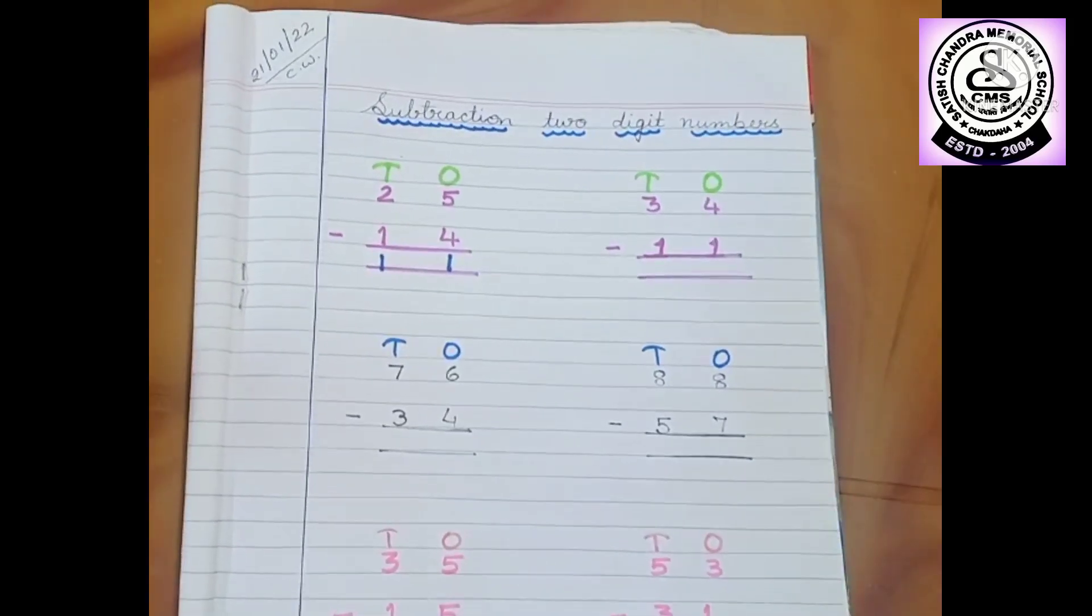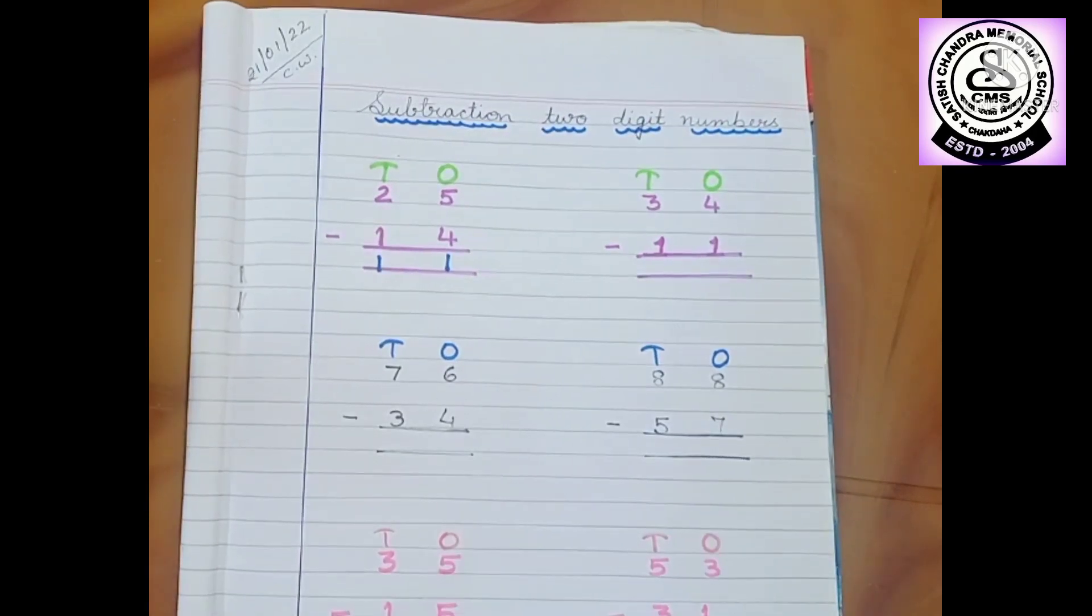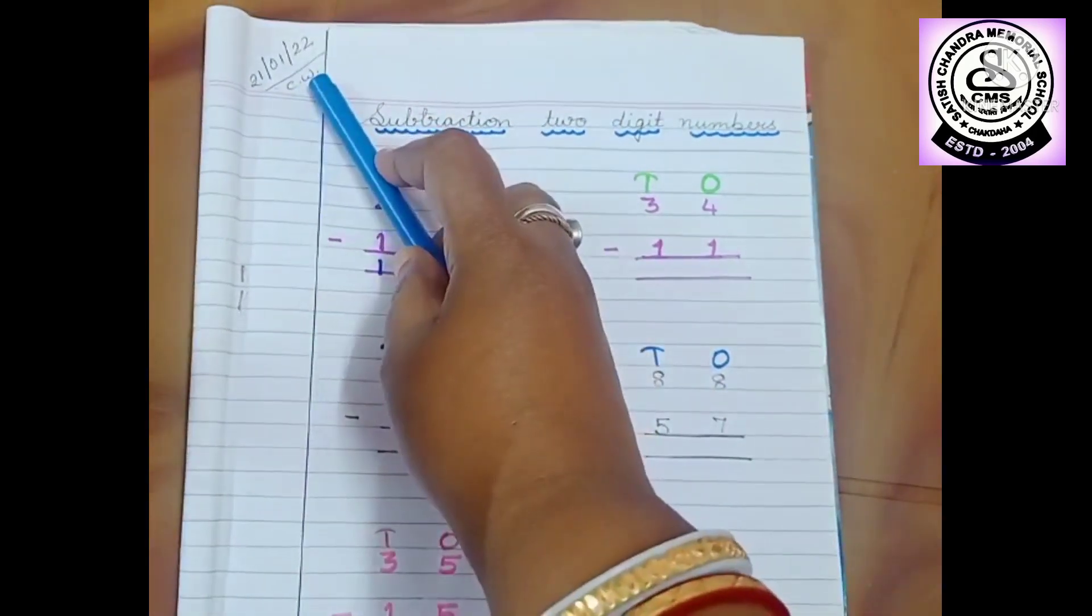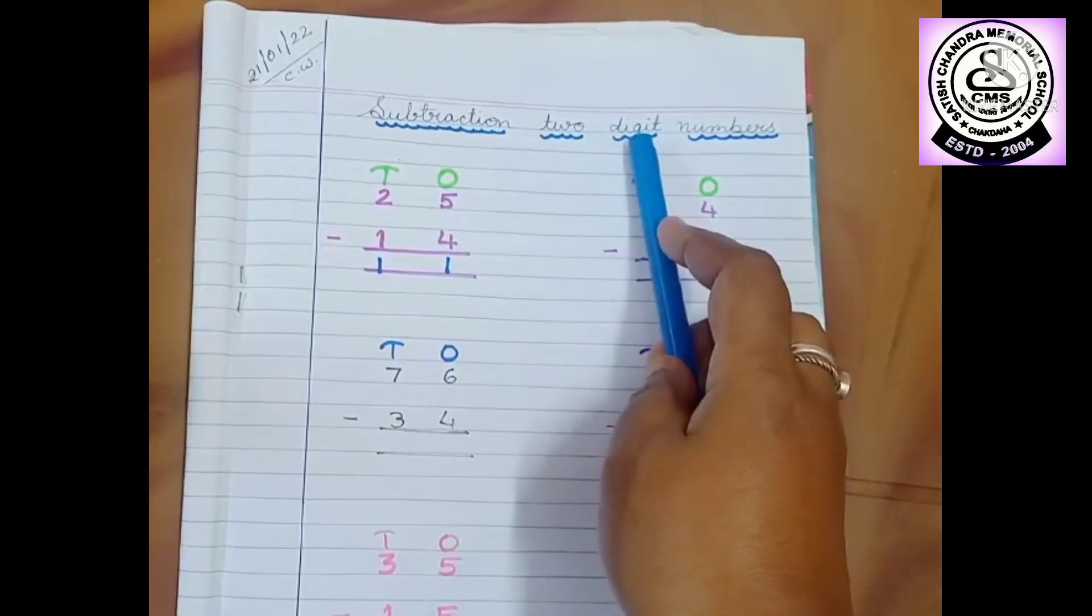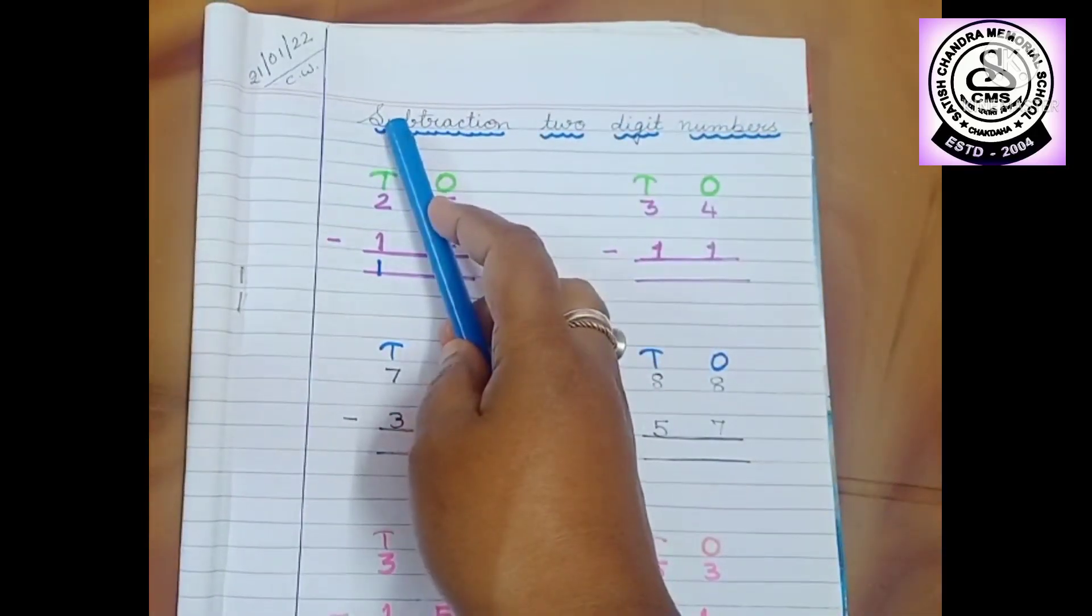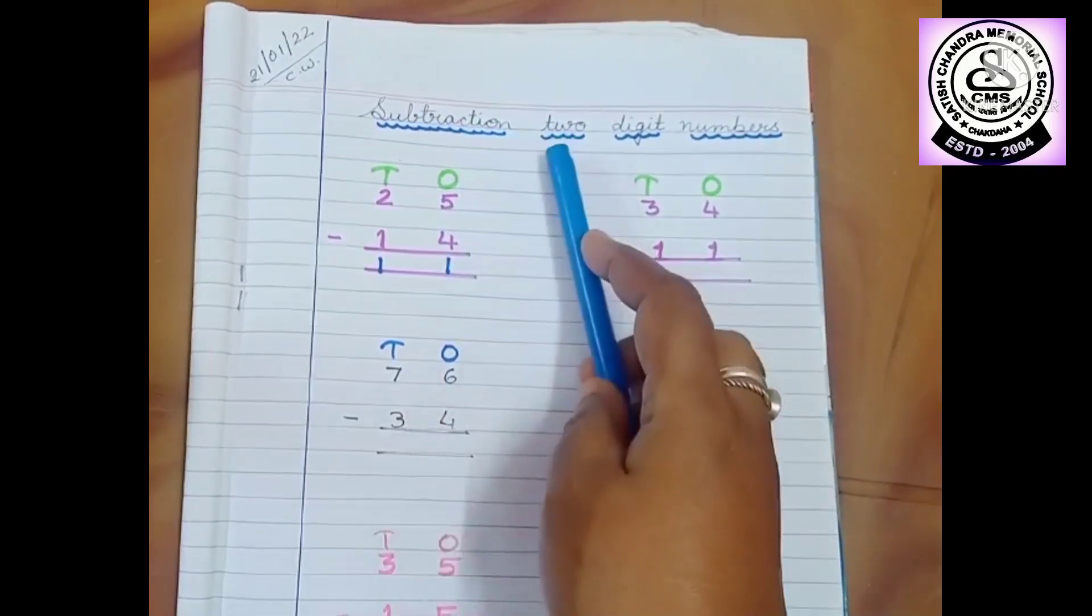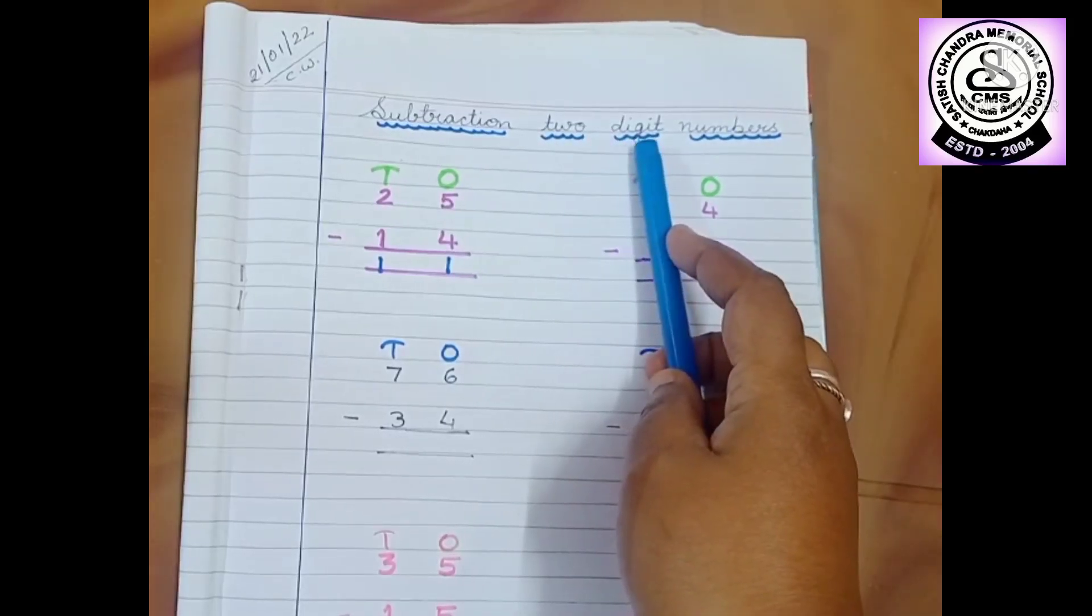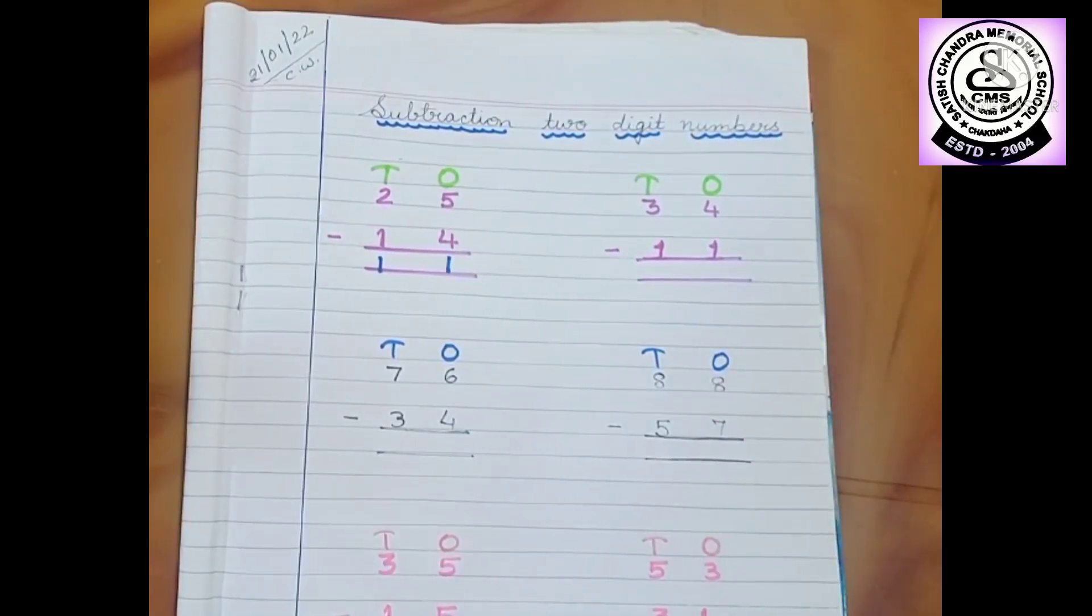So children, let's do some more subtraction for our practice. Okay, so first of all, take out your school copy. Write date, classwork, and heading: Subtraction 2 Digit numbers. What is the spelling of subtraction? S-U-B-T-R-A-C-T-I-O-N. Subtraction. 2 T-W-O, D-I-G-I-T Digit, Number N-U-M-B-E-R-S Numbers.